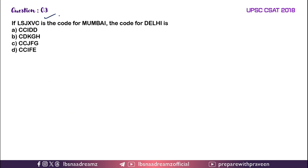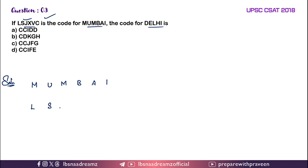Question 3: If L, S, J, X, V, C is the code for MUMBAI, the code for DELHI is? So for MUMBAI, this is the code: L, S, J, X, V and C. They are asking you to find the code for DELHI.